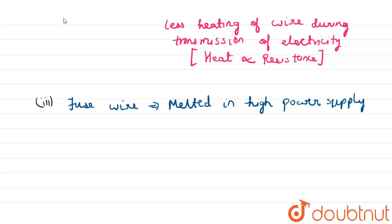And since fuse wire is in series, for example this is a diagram - this is a fuse wire and this is our apparatus, say bulb.